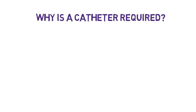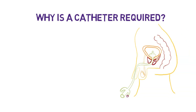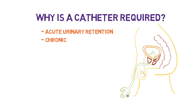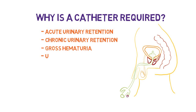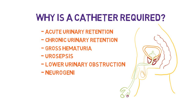We will discuss the difference between the different drainage systems and which will be most applicable for your specific patients, and lastly the application of special coatings for urinary catheters. Why do some patients require a catheter? There are many different reasons, including acute urinary retention, chronic urinary retention, gross hematuria, urosepsis, lower urinary obstruction, neurogenic bladder, surgery, and the need for accurate fluid balance.